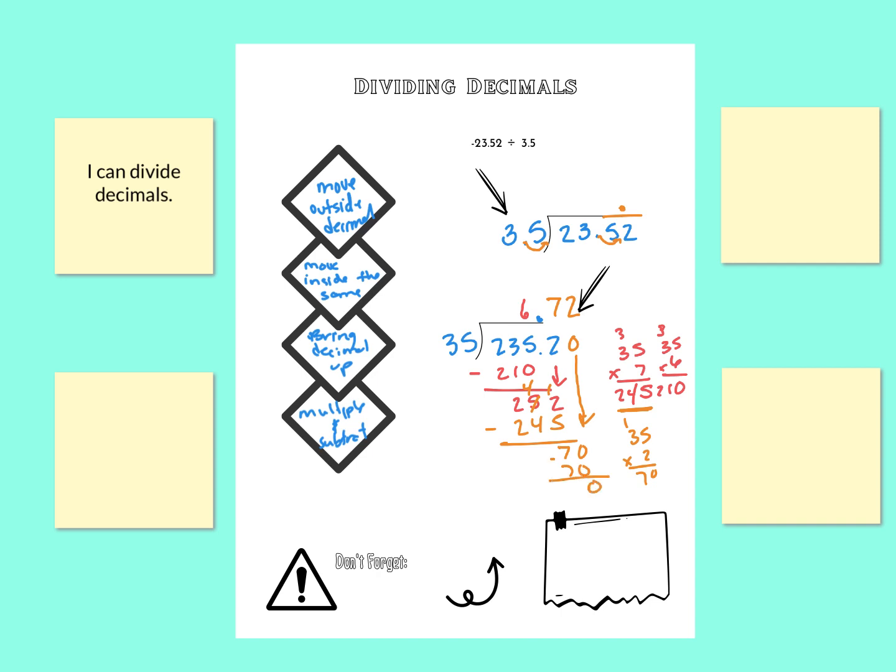So we're going to keep going until we get 1 of 2 things. Like we did here, we got to 0. That tells me I'm done. It's a terminating decimal. Or, if I notice that I kept getting the same number when I subtract, like I kept getting 7 or I kept getting 25, that's telling me that it's going to repeat. And then I can stop also. Or if you're going out too far, you can stop and then round.